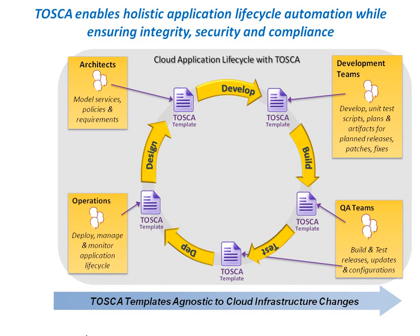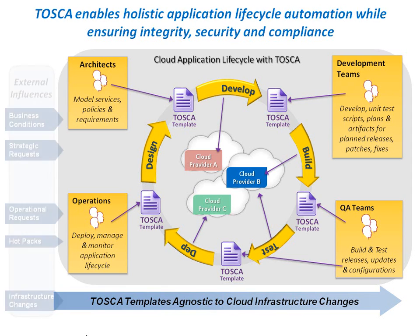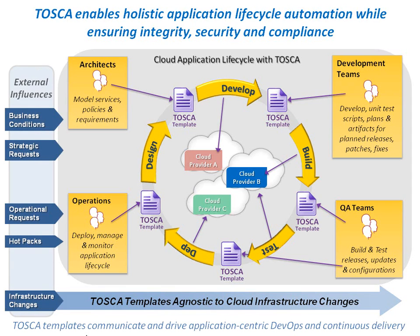In the operations phase, the operations team may initially deploy a cloud application into production that meets business requirements. Later on, Tosca enables the entire application team — from architects to operations — to collaborate in order to easily patch or improve the cloud application by specifying a new desired state in the Tosca service template in response to external influences such as changing business conditions.